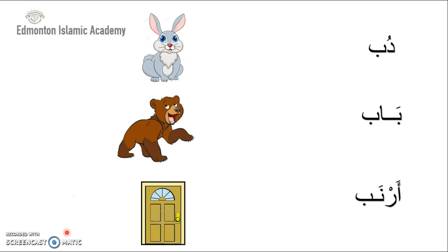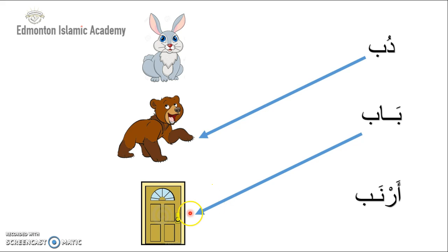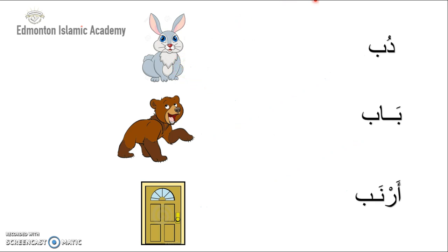Let's try to match every word with the picture. باب. أرنب. باب. Let's try to do it again. Do it by yourself. Match every word with the picture. باب. ارنب.